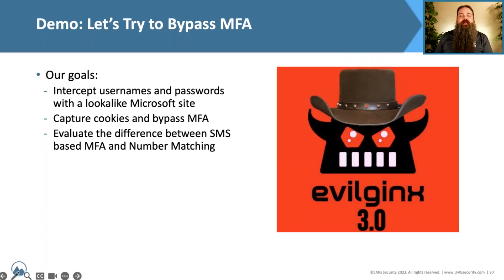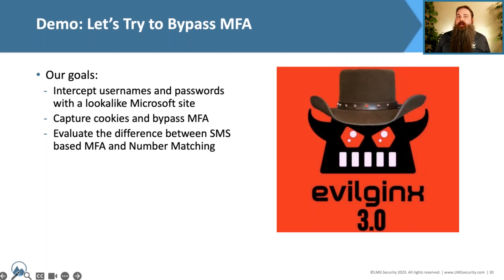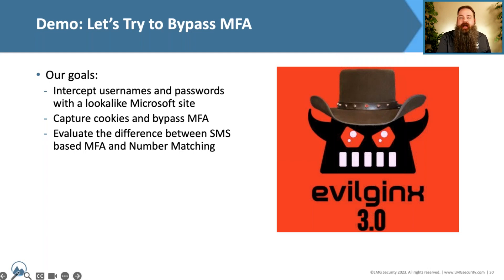Our goals for this demo are as follows: we want to be able to intercept things like usernames and passwords, and we're going to use Microsoft as the example. We're going to make a lookalike Microsoft site and grab data from it. We also want to be able to capture things like cookies and tokens and bypass multi-factor authentication. A regular phishing website can grab your username and password, but if you have multi-factor on the account, ideally that should stop the attack — we're going to showcase how that's not always the case.